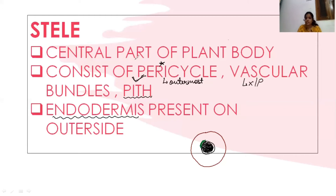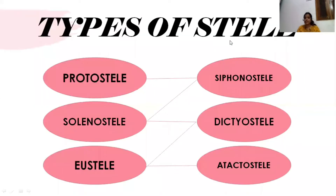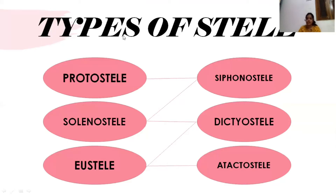The stele is basically divided into six types. The most primitive one is protostele, and then we have siphonostele, solenosterle, dictyostele, eustele, and atactostele. In this video I will be telling you about all these types of stele plus the evolution of the stele — which stele evolved from which type. We will study evolution at the last.